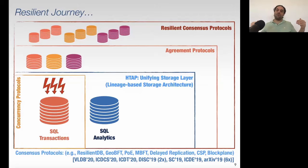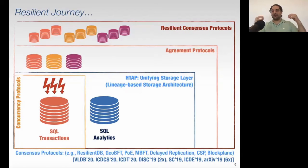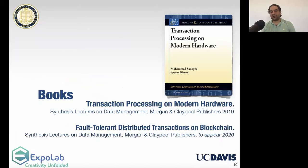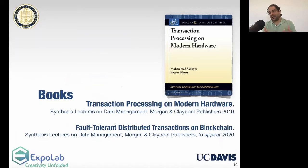This decentralized and democratic way of computing has fueled our work in the last three years. Given my long work on concurrency, my co-author Spiris from Ohio State and I decided to write a book on concurrency protocols from the last 20 years. We published a book called Transaction Processing on Modern Hardware by Morgan and Claypool last year. It really looks at the flourishing of concurrency control in the last 20 years based on the shift and availability of new hardware.